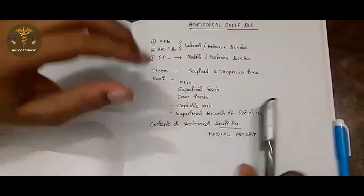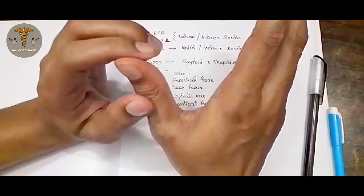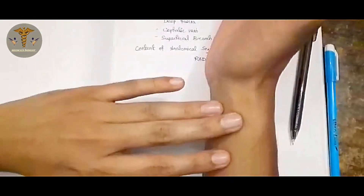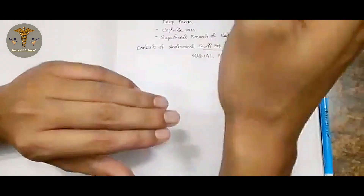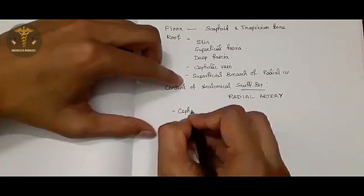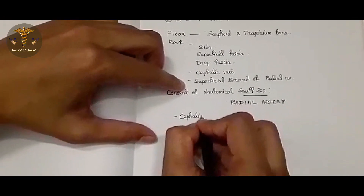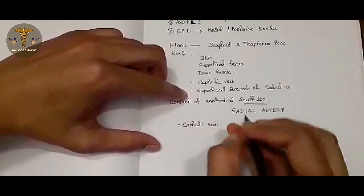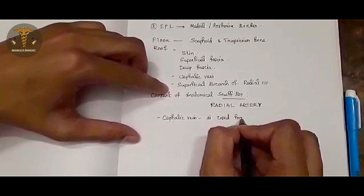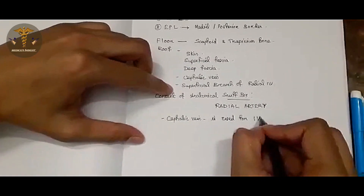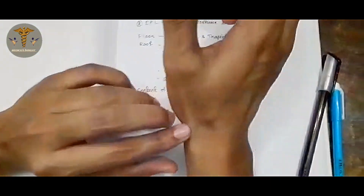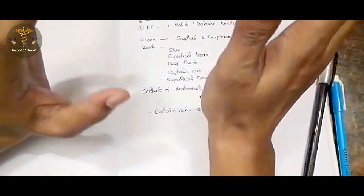Now here is the applied anatomy part. As mentioned, we can palpate the radial artery pulse at this location. The second structure is the cephalic vein, which is used for intravenous infusion — that is, for IV cannulation processes.